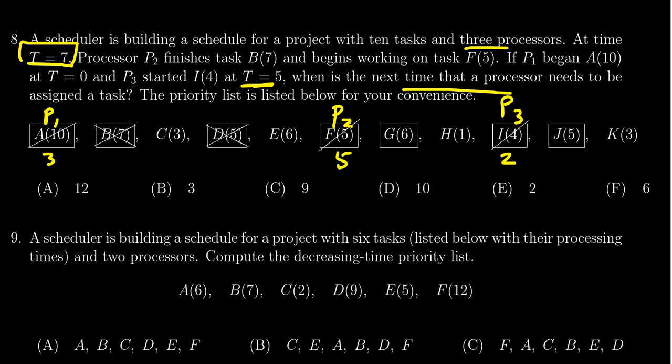The question asks when is the next time that a processor needs to be assigned a task. The thing is, in 2 turns task I will be completed, so processor 3 will need an assignment at that moment. Two turns from now is when the next job assignment is going to be necessary, and that's going to happen at time 9. So the answer would be C.